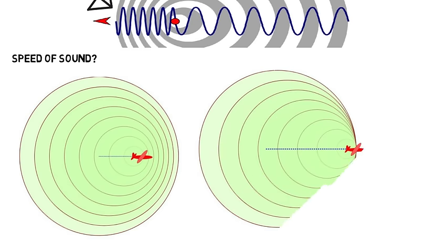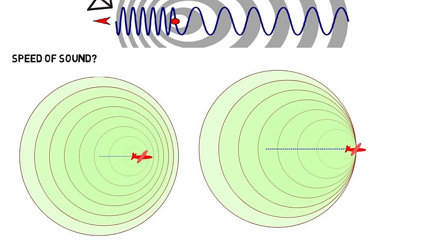Then at the speed of sound, they actually bunch up on top of each other or constructively interfere. This combining of sound waves in front is extremely loud and is known as a sonic boom, which can break glass and shake windows while thousands of feet in the air.